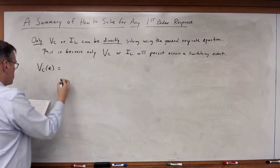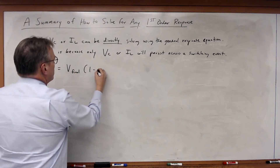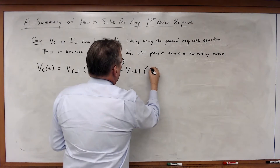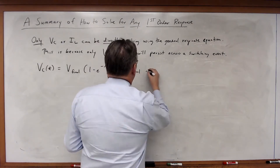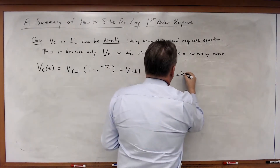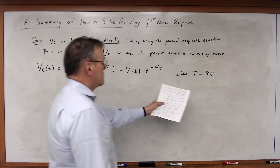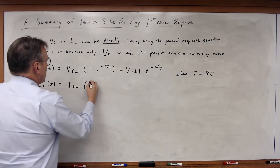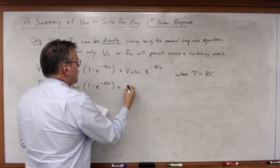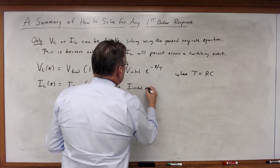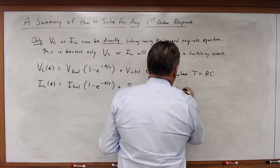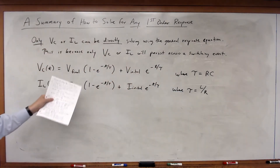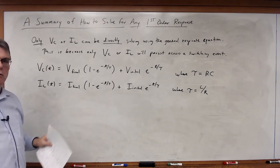There are two equations: VC(t) = V_final × (1 − e^(−t/τ)) + V_initial × e^(−t/τ), where τ = RC. And IL(t) = I_final × (1 − e^(−t/τ)) + I_initial × e^(−t/τ), where τ = L/R. These are the only two quantities for which this general solution equation works.